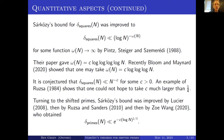What about the shifted primes? Sárközy's bound there was even weaker, and it was improved by Lucier, then by Ruzsa and Sanders, and then most recently by Zoe Wang, who was a DPhil student here at Oxford. She obtained the bound that delta_primes(n) — the density of the largest subset of {1,...,n} with no two elements differing by p minus 1 — is bounded above by essentially e^{-(log n)^{1/3}}.